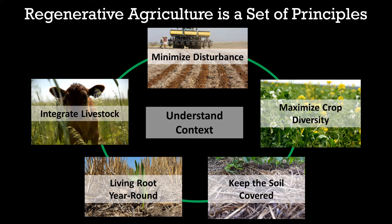The next principle is to minimize disturbance. Disturbances like tillage, where plows or discs are used to disrupt the soil, or over-applying fertilizers and pesticides, can disrupt the agricultural ecosystem. Minimizing these chronic disturbances is an important first step to letting the soil and ecosystem recover.